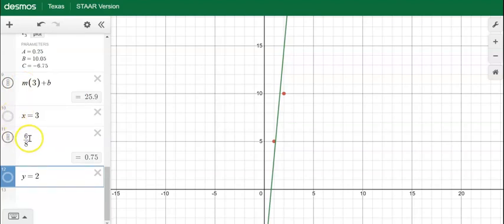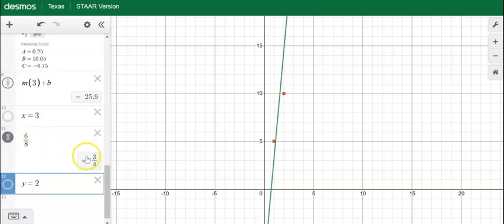This will work for other fractions too. So if we type in, for example, 6/8, we have the decimal 0.75, but if we click this, it simplifies our given fraction to 3/4.